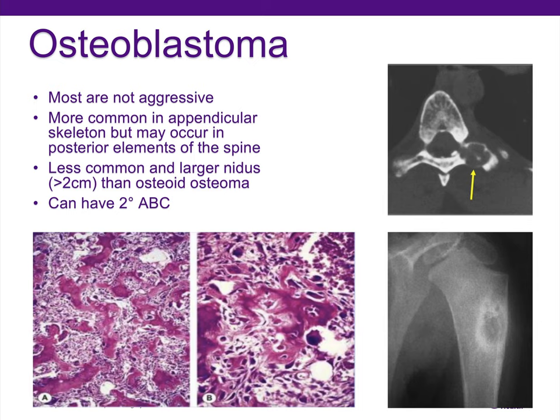Osteoblastoma is the cousin of osteoid osteoma — they look exactly the same under the microscope, except osteoblastoma tends to be larger. Anything more than two centimeters is the diagnosis of osteoblastoma. It's more common in the appendicular skeleton but frequently cited to be in the posterior elements of the spine. Most are not very aggressive despite being considered a benign aggressive tumor. They can also have secondary aneurysmal bone cysts form.